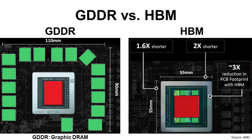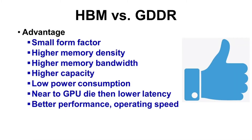Also, HBM is located much closer to the GPU, which is good for fast data processing. So here is a list of advantages of HBM over GDDR: HBM has a smaller form factor with higher memory density, memory bandwidth, and capacity. HBM also consumes less power and shows better performance with lower latency.